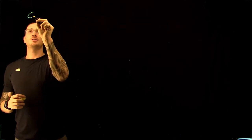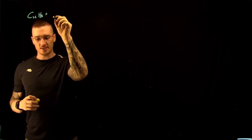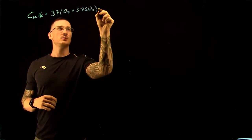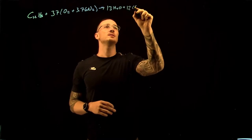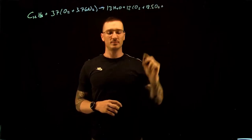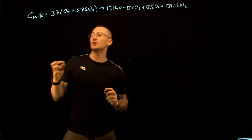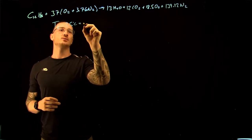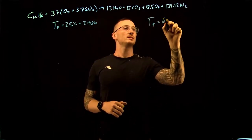We're told that combustion occurs with 200% theoretical air, so our equation becomes C12H26 plus 2 times as much air: 37 times (O2 plus 3.76N2). This gives 13H2O plus 12CO2 plus 18.5O2 plus 139.12N2. The temperature of our reactants is 25 degrees C, equal to 298 Kelvin, and the temperature of our products is 600 Kelvin.